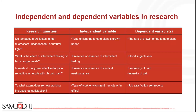Independent and dependent variables in research are generally used in experiment and quasi-experiment research. To see some examples, consider this research question: do tomatoes grow faster under fluorescent, incandescent, or natural light?